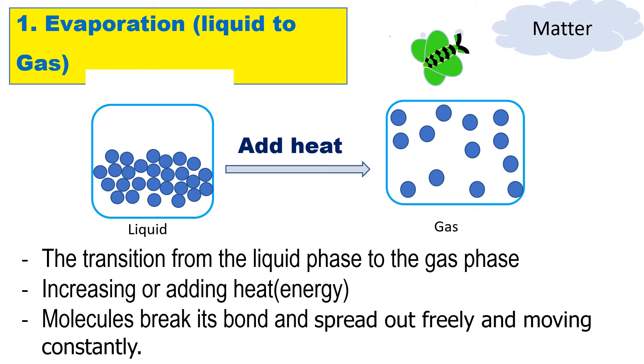One of the phase changes is evaporation. That is the transition of liquid phase to gas phase. In this process, the requirement is increasing or adding heat or energy. So what happens to the molecules? The molecules break its bond and spread out freely and moving constantly.